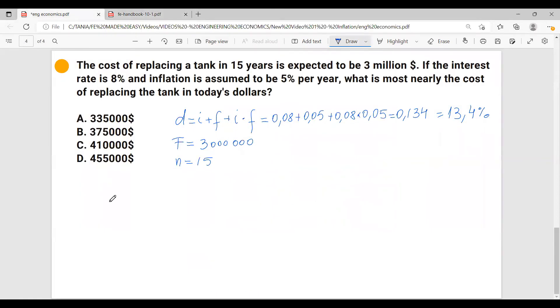So let's do this. The way it's done is we have to convert to present giving future. Our interest rate is 13.4% and timeline is 15 years.